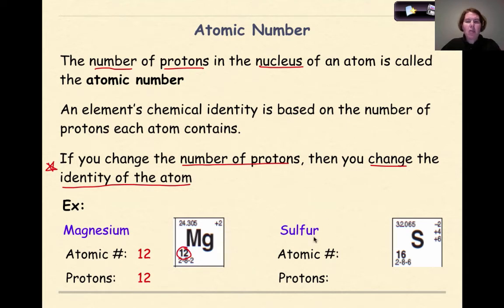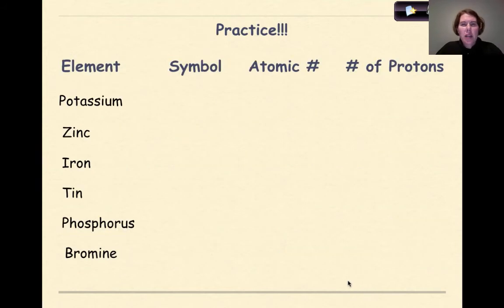Let's look at another example. Sulfur. Sulfur is represented by a capital S. The atomic number is 16, therefore the number of protons in each atom of sulfur would also be 16. Now let's try some practice.